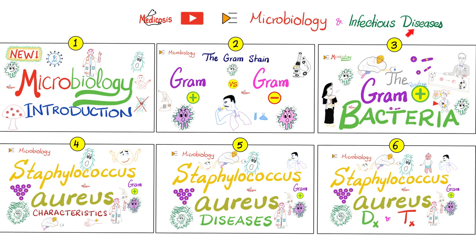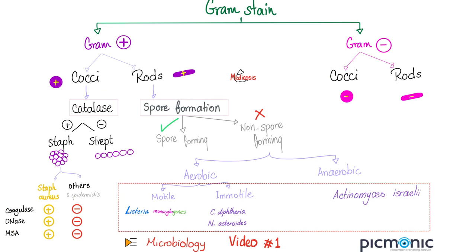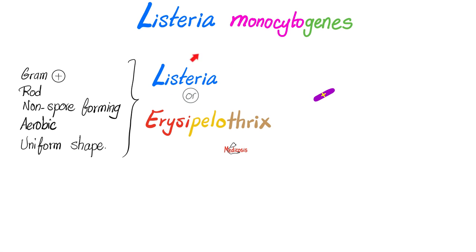Please watch the videos in this playlist in order. Erysipelothrix is a gram-positive bacillus, non-spore forming, yet it is aerobic — just like Listeria. So both Listeria and Erysipelothrix are gram-positive rods, non-spore forming, aerobic, and uniform in shape.